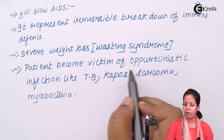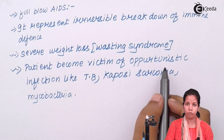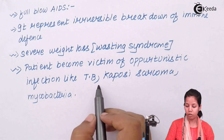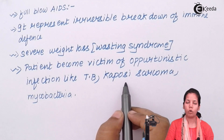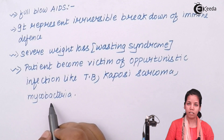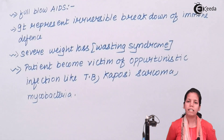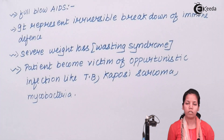Once that happens, the patient becomes a victim of opportunistic pathogens — infections that you and I would be fine fighting, but which the AIDS patient is prone to. These could include tuberculosis, Kaposi Sarcoma with red patches on the back of the body, mycobacterium, and yellow fever. All such diseases could be deadly for these patients. Ultimately, within a few months of an AIDS patient contracting these diseases, that patient is not going to survive and will eventually die.